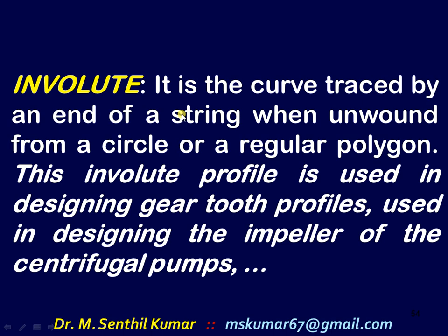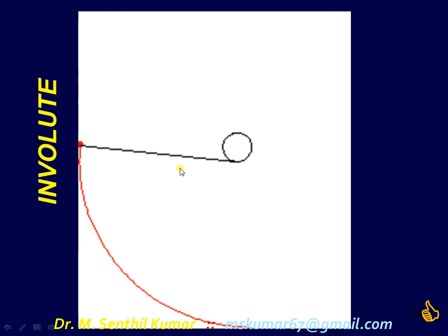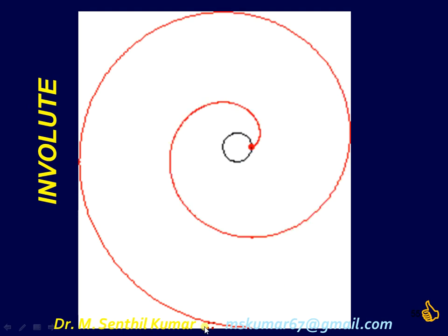For example, take your hand and consider it as a cylinder. You just tie a string over your hand. The path traced by the one end of the string while you are tying it is nothing but the involute. I will show you an animated GIF image so you will understand what an involute is. You see the cylinder — you just tie a rope this way, and the path traced by the end of the string while wrapping or unwrapping is nothing but the involute.